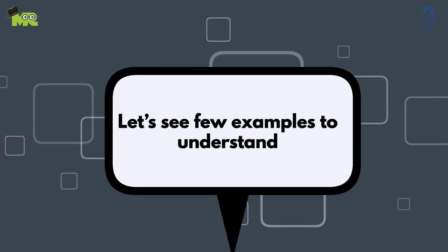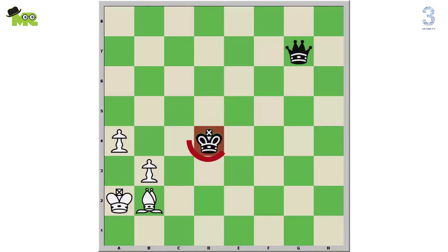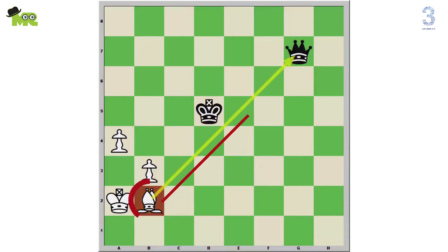Here are a few examples to understand. At this position, the d4 black king is in check by the b2 white bishop. Now the d4 black king is forced to move. Let's say the d4 king moves to d5. Now the b2 white bishop will capture the g7 black queen. This is a skewer, and the g7 black queen is the skewered piece.